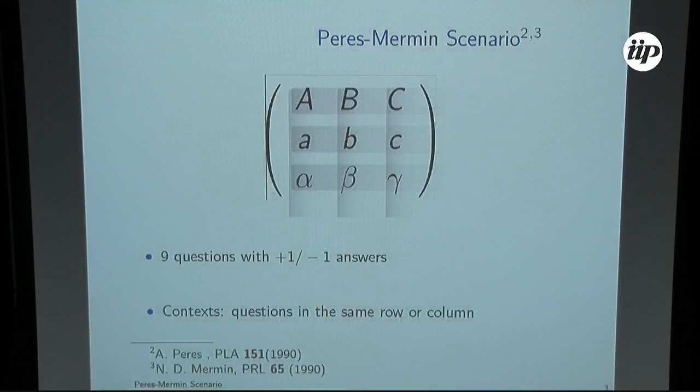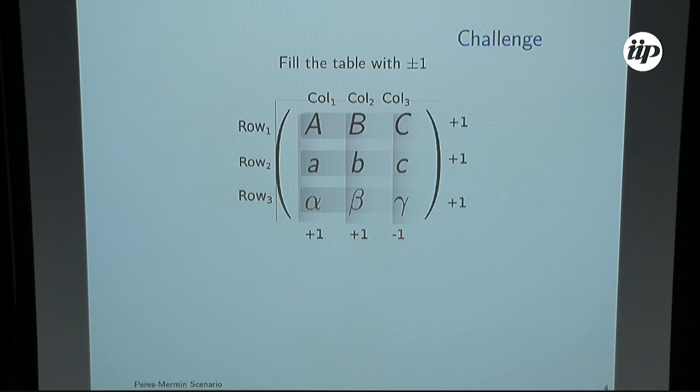There's a nice example of this type of situation, the Peres-Mermin square. There are nine questions with plus or minus answers. You can organize them in this matrix such that the context or the allowed questions are those on the same row or in the same column. The challenge is trying to fill the square such that the product of the outputs for the rows are plus one, also for the first two columns, but the last column is minus one.